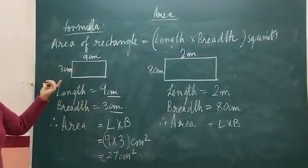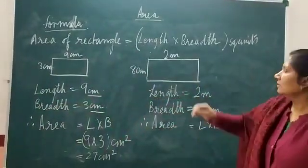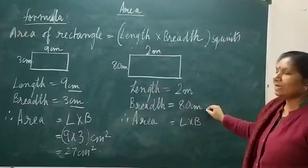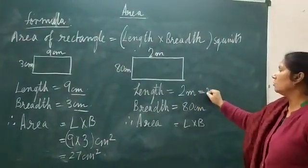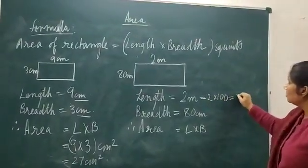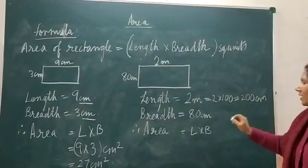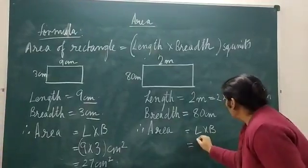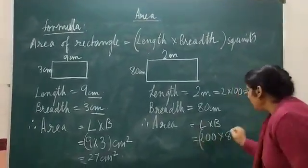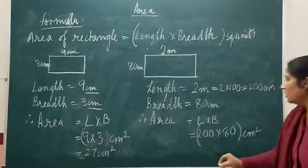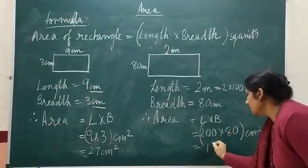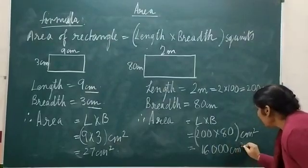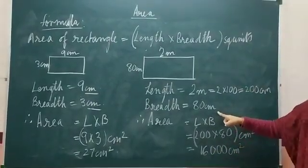But here the units are different — length is 2 meters, breadth is 80 centimeters. So we convert meters into centimeters: 2 multiplied by 100 equals 200 centimeters. Now area equals length multiplied by breadth, which is 200 multiplied by 80. The unit is centimeter square, so that equals 16,000 centimeter square. You can also convert into meters — that is also fine.